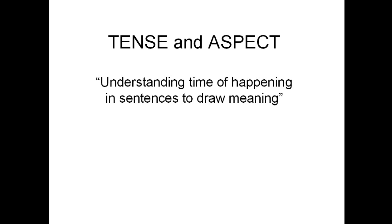Assalamualaikum warahmatullahi wabarakatuh, good morning everyone. Next we have tense and aspect — it's the component that we have to know and understand to help us understand the meaning in a sentence. The function of tense in English is to state the time of happening, and the characteristic of English tense is the changing form of the verbs. We have present tense, past tense, and future tense. That's what we call tenses in English, and that's what we're going to discuss — how these tenses can help us analyze meaning in semantics.